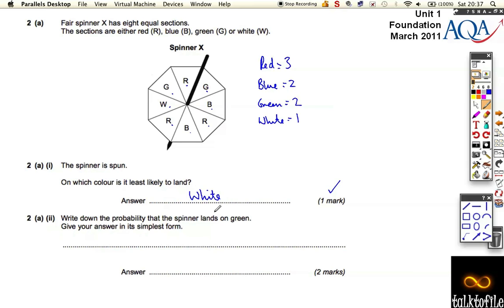Write down the probability that the spinner lands on green and give your answer in its simplest form. Well, we've already done some of the hard work. So we know there's 8 sections and 2 out of 8 of them are green. Writing that will be 1 mark. We have to cancel this down. So if we half the top and half the bottom, keeping the fraction the same, we get the answer of a quarter, which is the second mark.